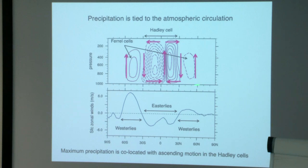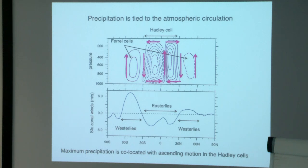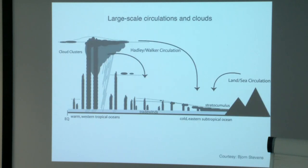The Hadley cells occupy the latitudinal belts where the surface zonal wind is easterly, and below the Ferrell cells we have surface westerly flow. Understanding cloud processes has proven very, very hard. Even the sign of cloud feedbacks as the climate changes remains poorly understood and poorly constrained, but it is clear that the tropical overturning fundamentally impacts clouds and different cloud regimes across the tropics.